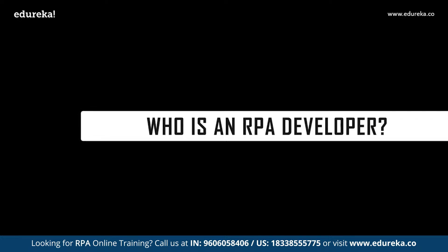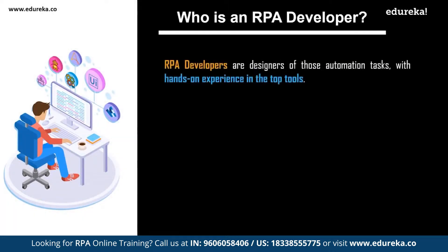RPA, or robotic process automation, is a technology wherein you automate manual tasks using RPA tools present in the market. These tasks could be simple or complex — all business processes, simple to complex, are automated using an RPA tool. There are mainly three tools which are very popular in today's market: UiPath, Blue Prism, and Automation Anywhere.